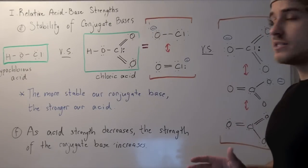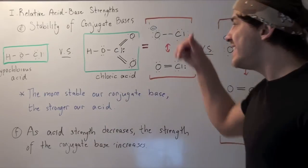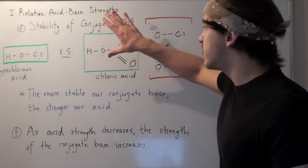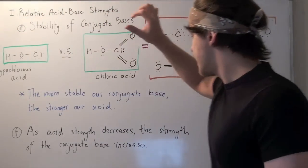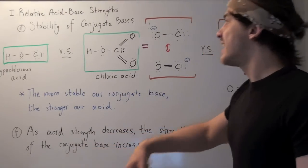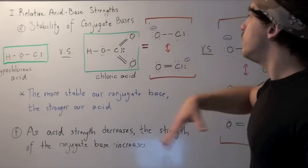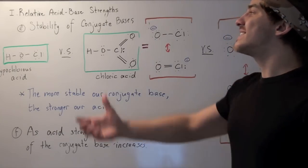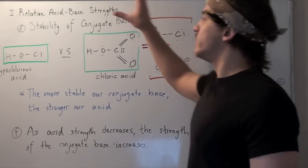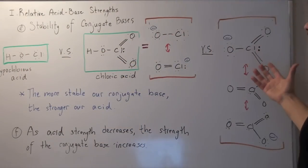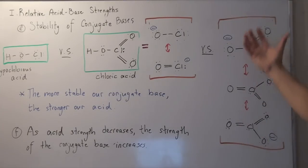That also means, as acid strength decreases, say from going from this guy to this guy, the strength of our conjugate base increases. In other words, this guy will be more likely to accept an H atom and go to this guy, than this guy, because this guy exists by itself in a more stable state.